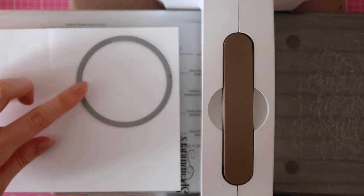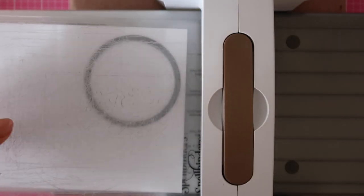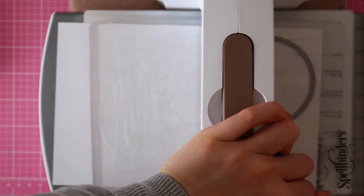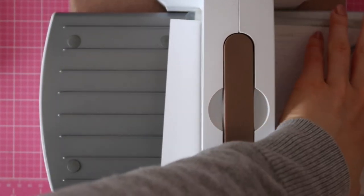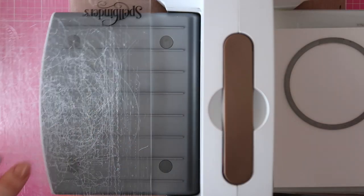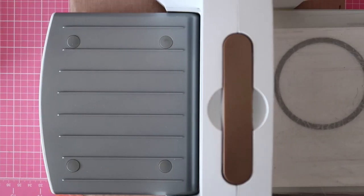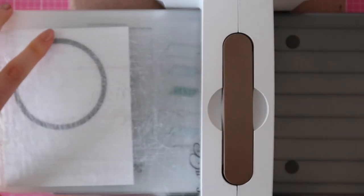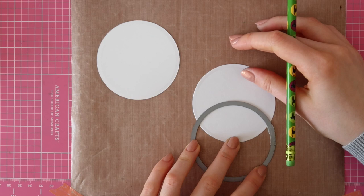Without further ado, let's get started on this card. I'm starting out with a circle die and some masking paper sheets from Simon Says Stamp. I'm die cutting the circle out of the masking paper and then I'll be die cutting it once more using some Neenah Solar White 80lb Classic Crest cardstock.